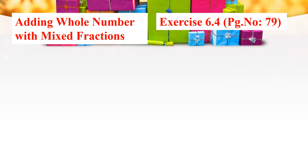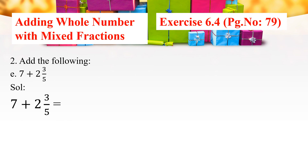The next topic is adding a whole number with a mixed fraction. Exercise 6.4, page number 79, second question, problem E: 7 plus 2 and 3 by 5. Here, the first term is a whole number and the second is a mixed fraction. We can add the whole parts directly: 7 plus 2 equals 9. We keep the proper fraction as it is. Therefore, the answer is 9 and 3 by 5.